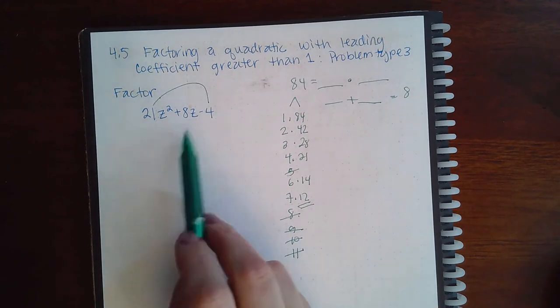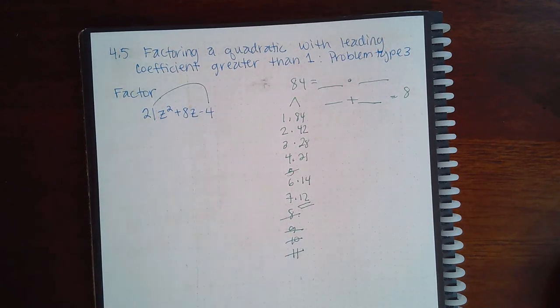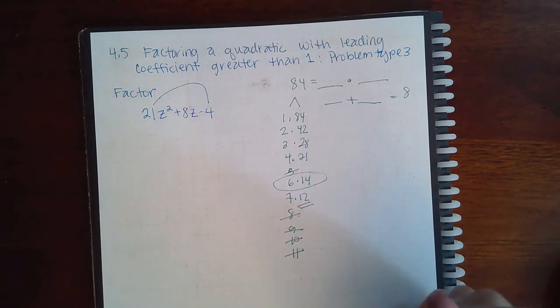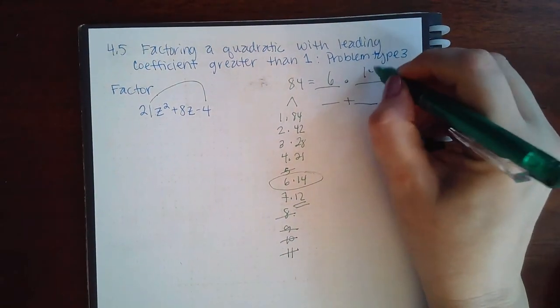We need to find the ones that subtract to give us 8. And that would actually be this pair right here: 6 and 14.